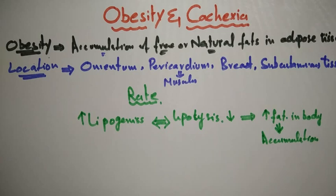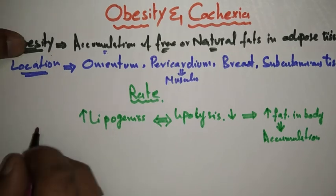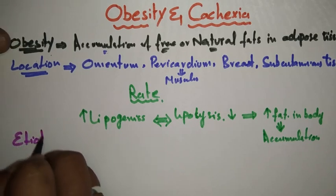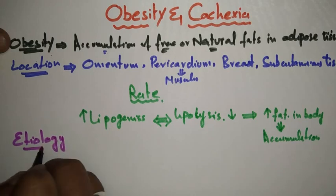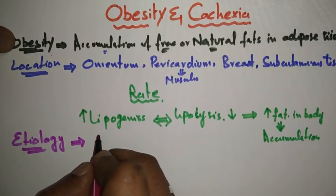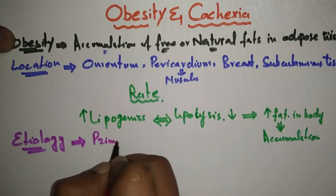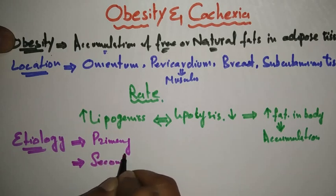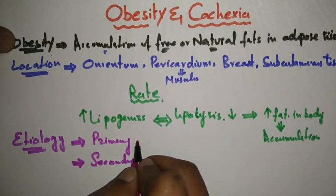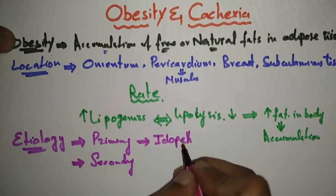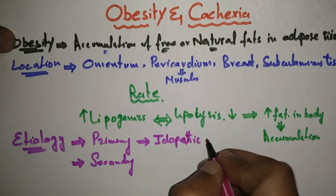If we talk about the etiology of obesity, we have two main etiologies. The first is primary etiology, which is idiopathic — meaning unknown. The second is secondary etiology.